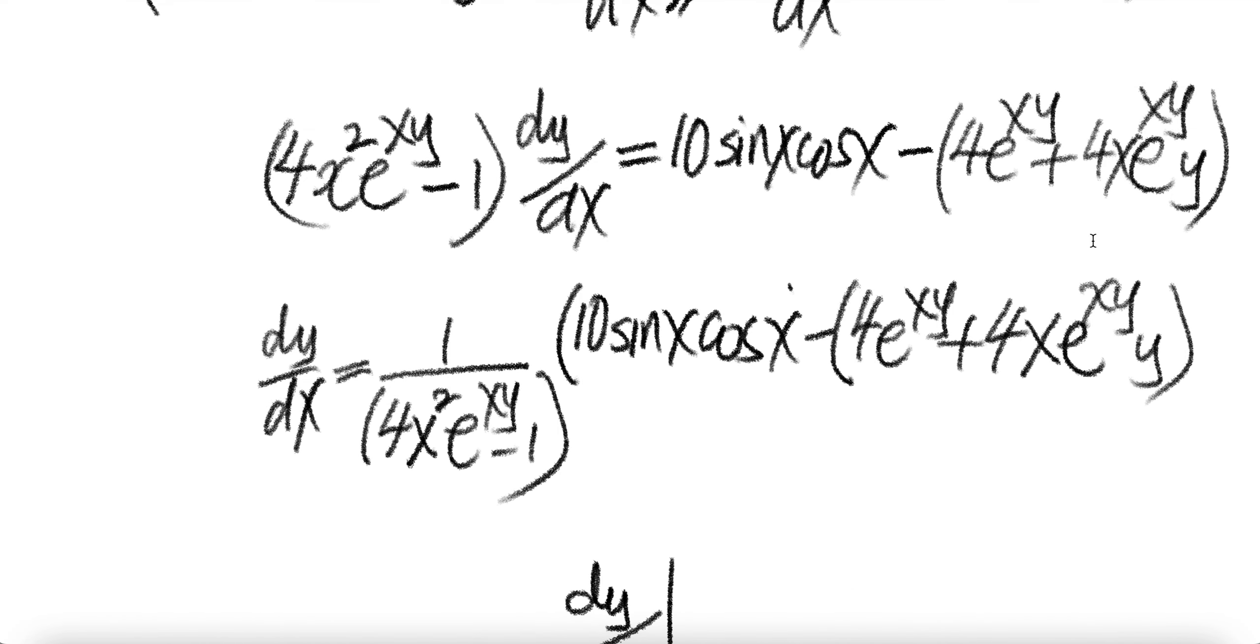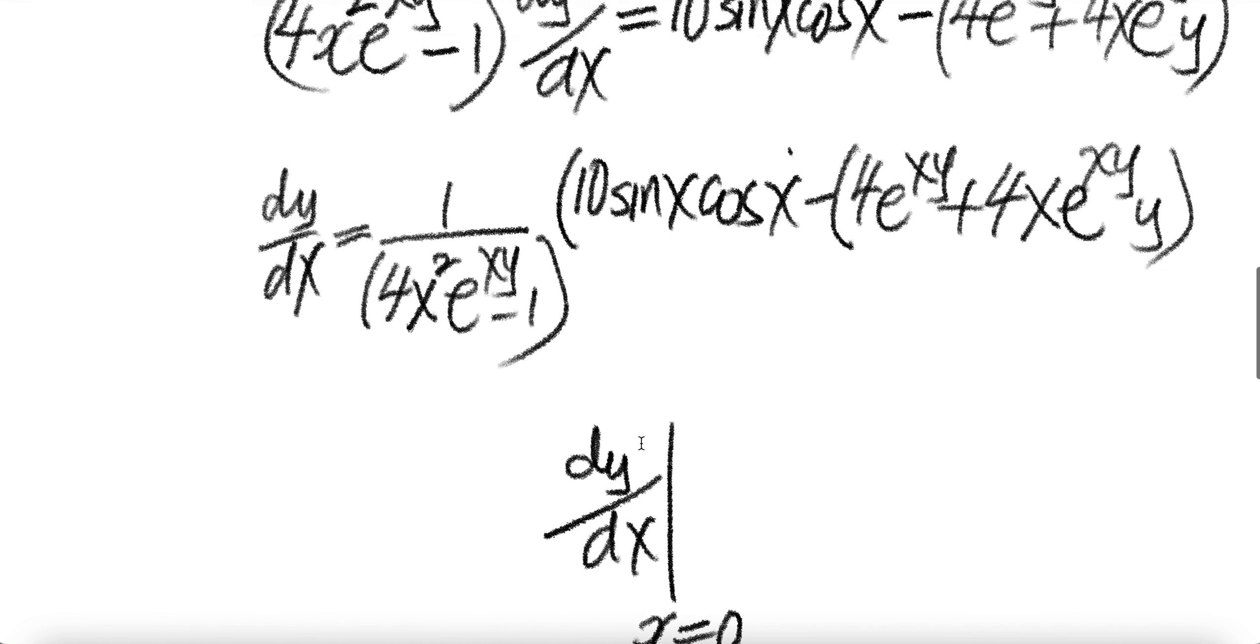Now divide both sides by this. This is gone, and then you'll have the right hand side divided by this piece.